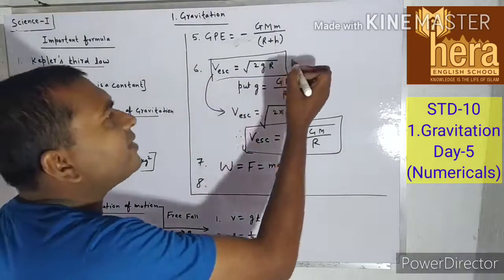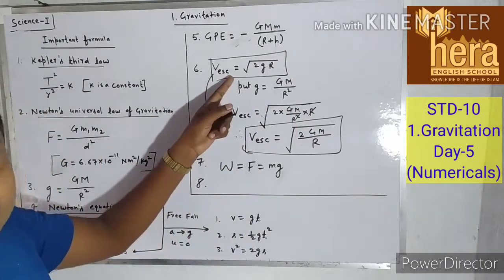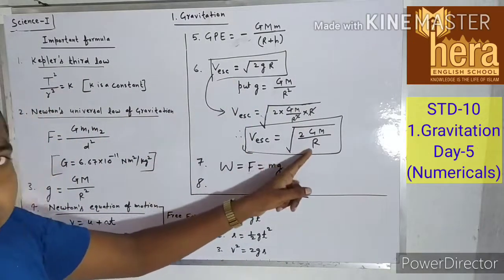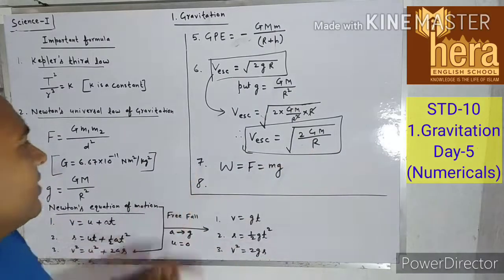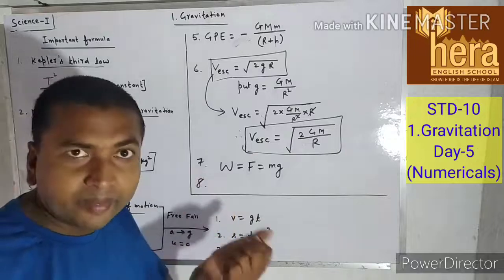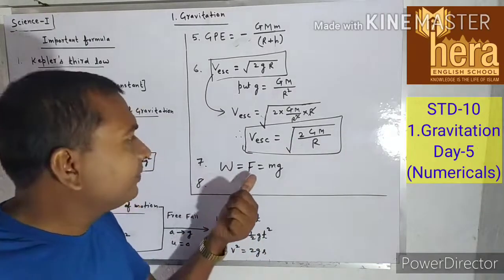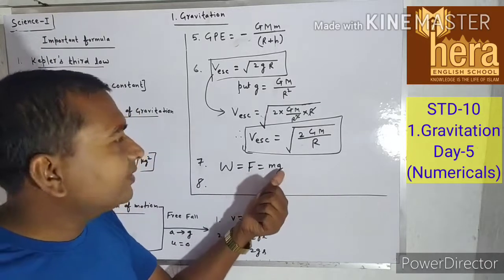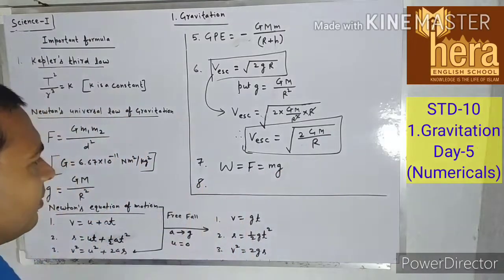It depends on the numerical which formula to use to find escape velocity. The seventh formula: weight W = mg, where m is the mass and g is the acceleration due to gravity.